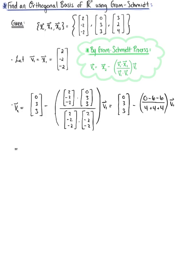This is equal to the vector (0, 3, 3) minus. Notice in the numerator we have -12 divided by a positive 12, so we have negative times -1, which is plus vector v₁, the vector with components (2, -2, -2). This leaves us with the vector (2, 1, 1).